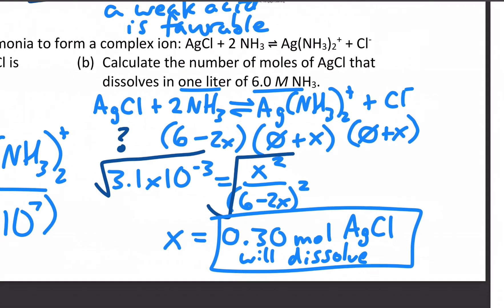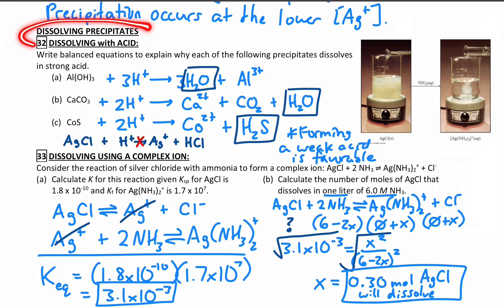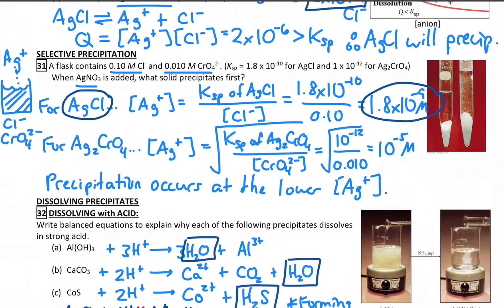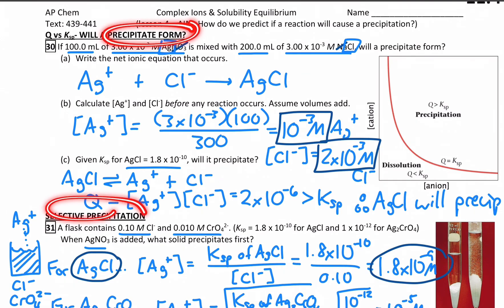So that's how we calculate and qualitatively figure out how we dissolve precipitates. And that just follows how we form precipitates. Will it form and are they selective?